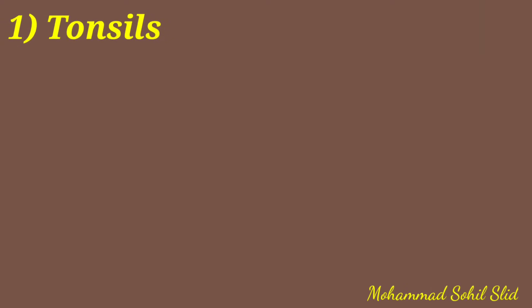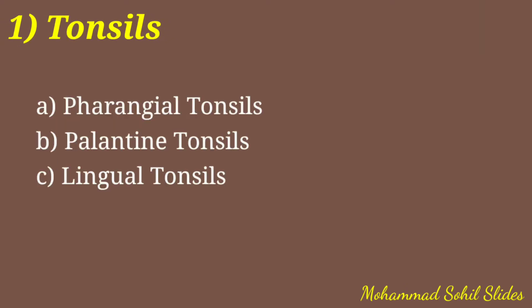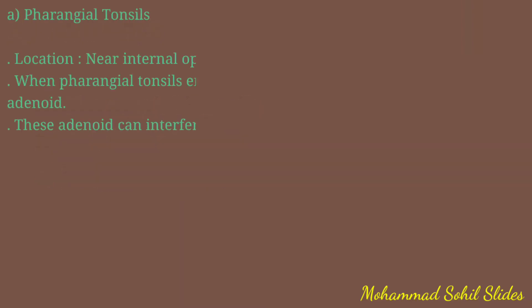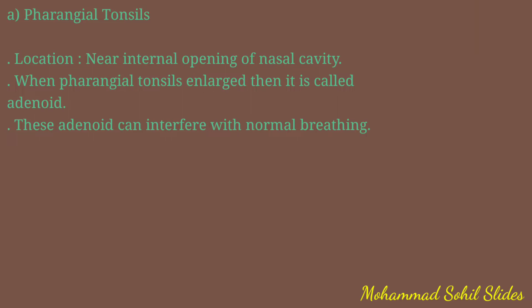First are tonsils. There are three groups of tonsils: pharyngeal tonsils, palatine tonsils, and lingual tonsils. The pharyngeal tonsils are located near the internal opening of the nasal cavity. When pharyngeal tonsils are enlarged, they are called adenoids, and these adenoids can interfere with normal breathing.